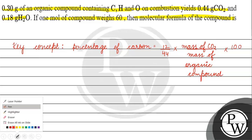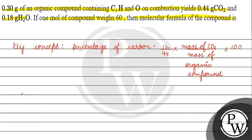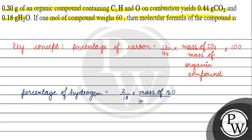Next, we are going to talk about the percentage of hydrogen. The formula is: percentage of hydrogen equals (2/18) multiplied by mass of water, divided by mass of organic compound, multiplied by 100.